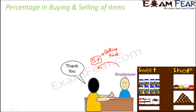But from where does the shopkeeper get the stock in his shop? He is also buying that book from somewhere else, maybe from the main market or the wholesale market. The price that the shopkeeper pays to buy that book is called the cost price.